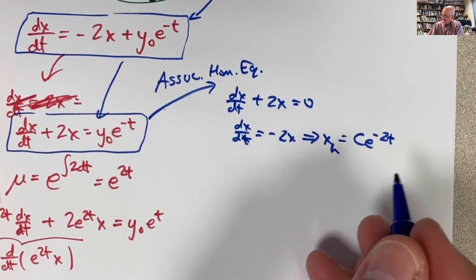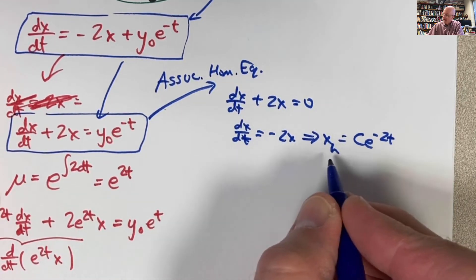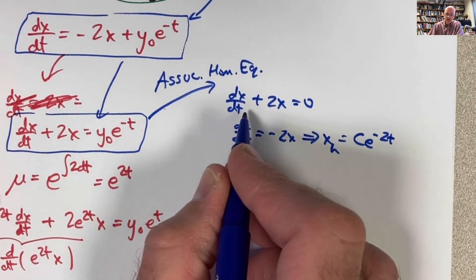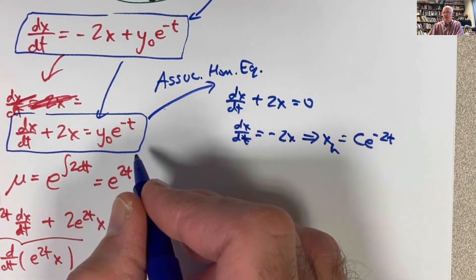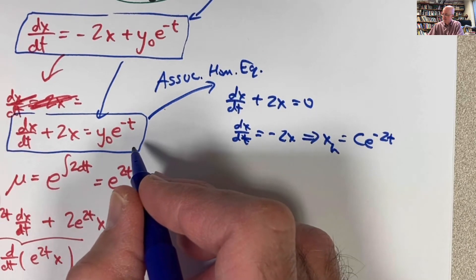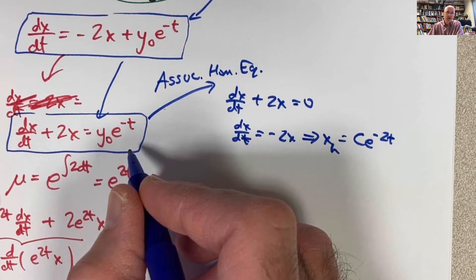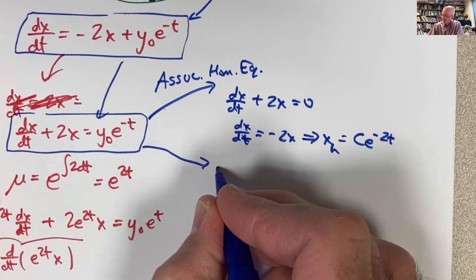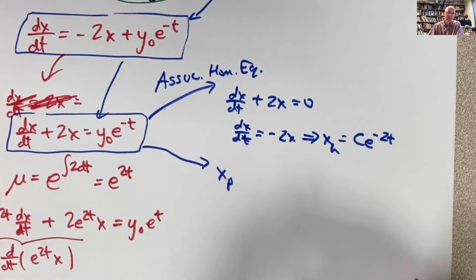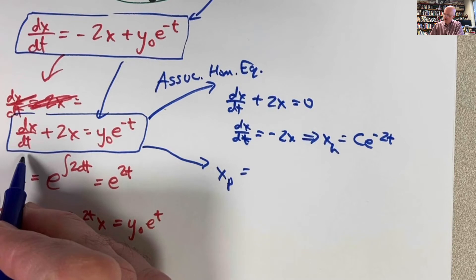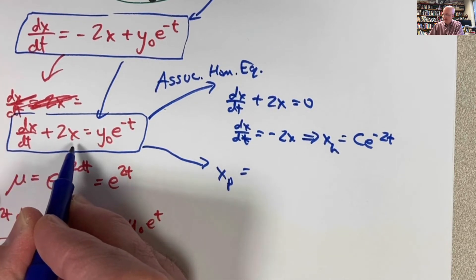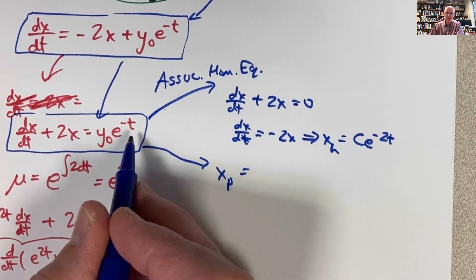So what do we do from this? After we've got this xh, this general solution of the associated homogeneous equation, we then are after what's called a particular solution of this equation right here by guessing. The method of undetermined coefficients sounds fancy, but it's essentially educated guessing. Take this equation and write down a function, call it x sub p for particular, that is a guess. It's not a wild guess, it's an educated guess.